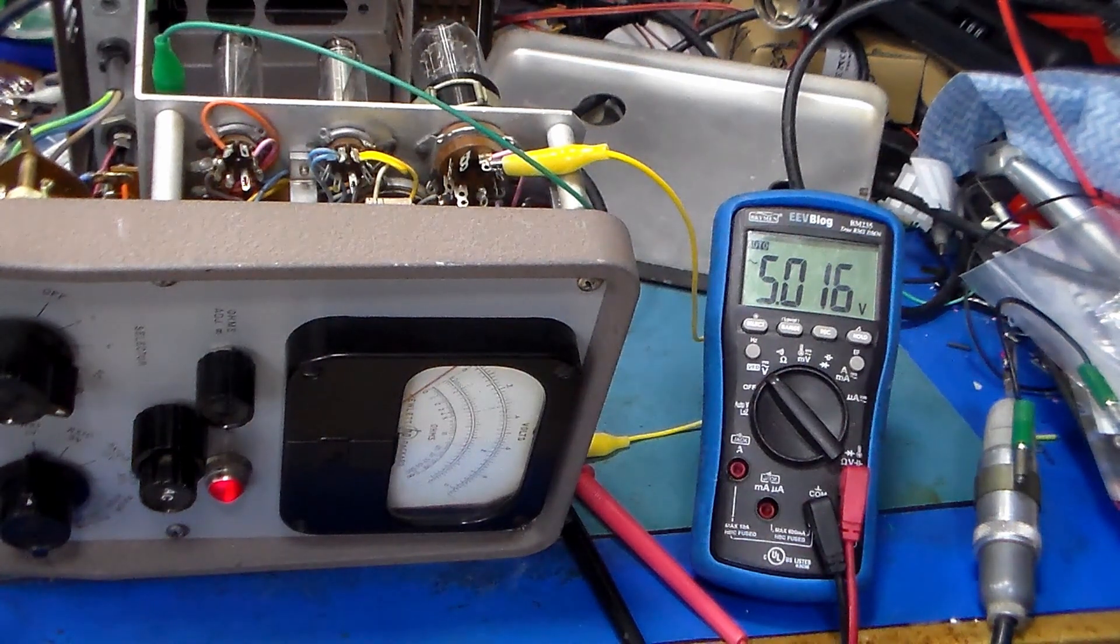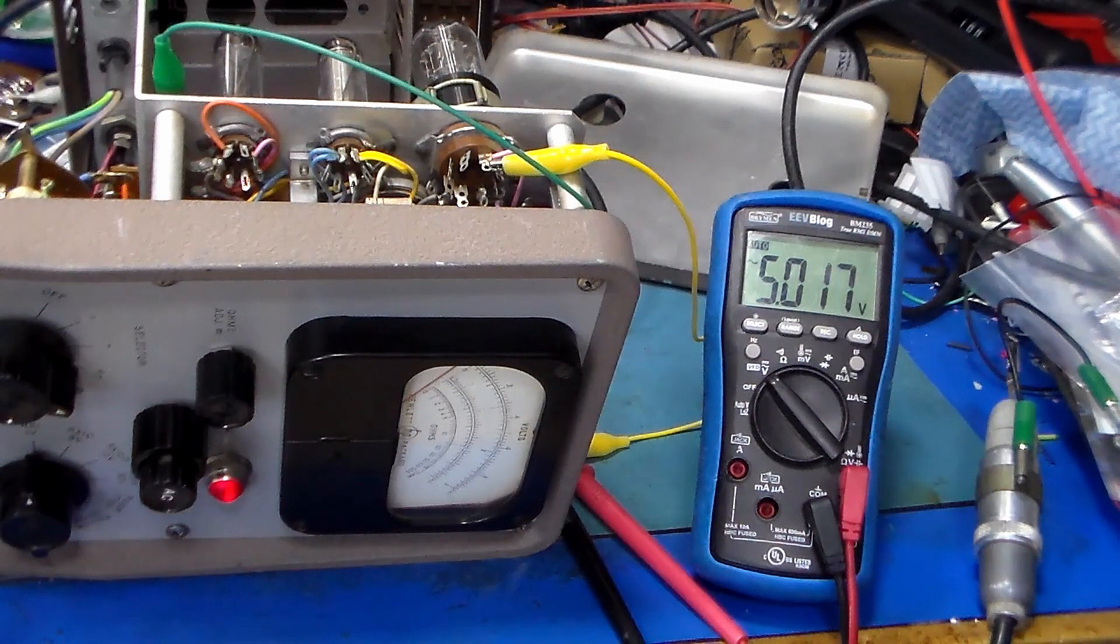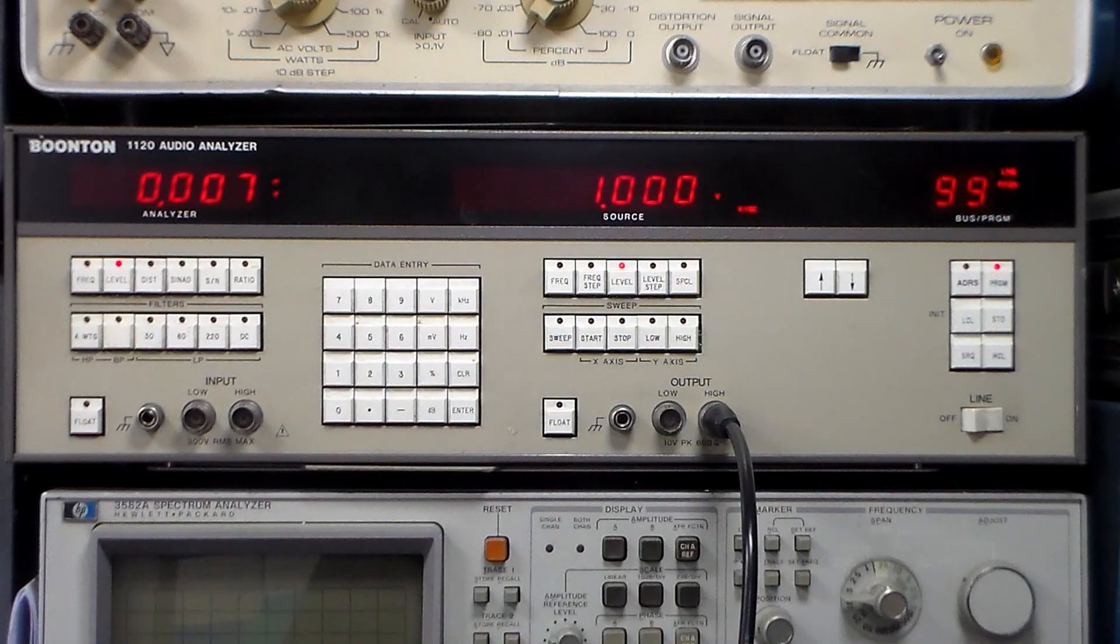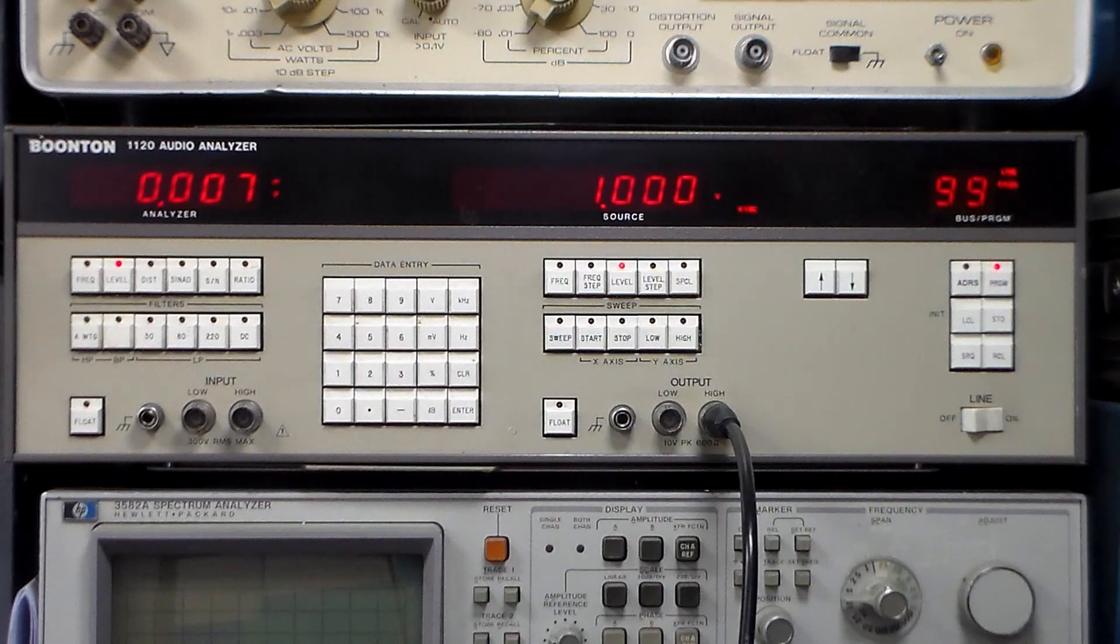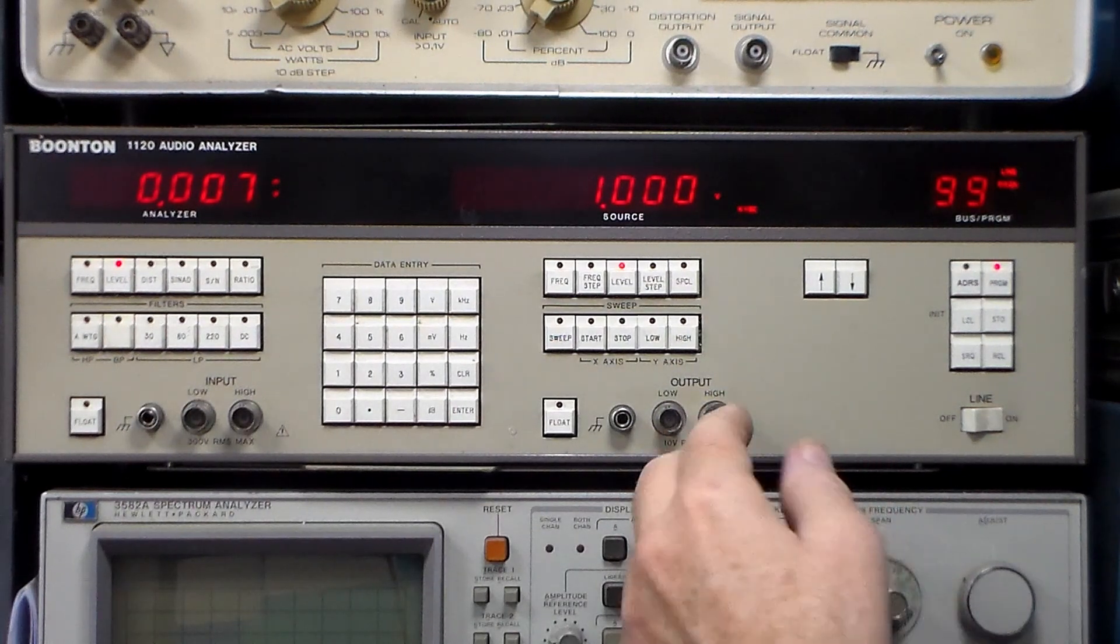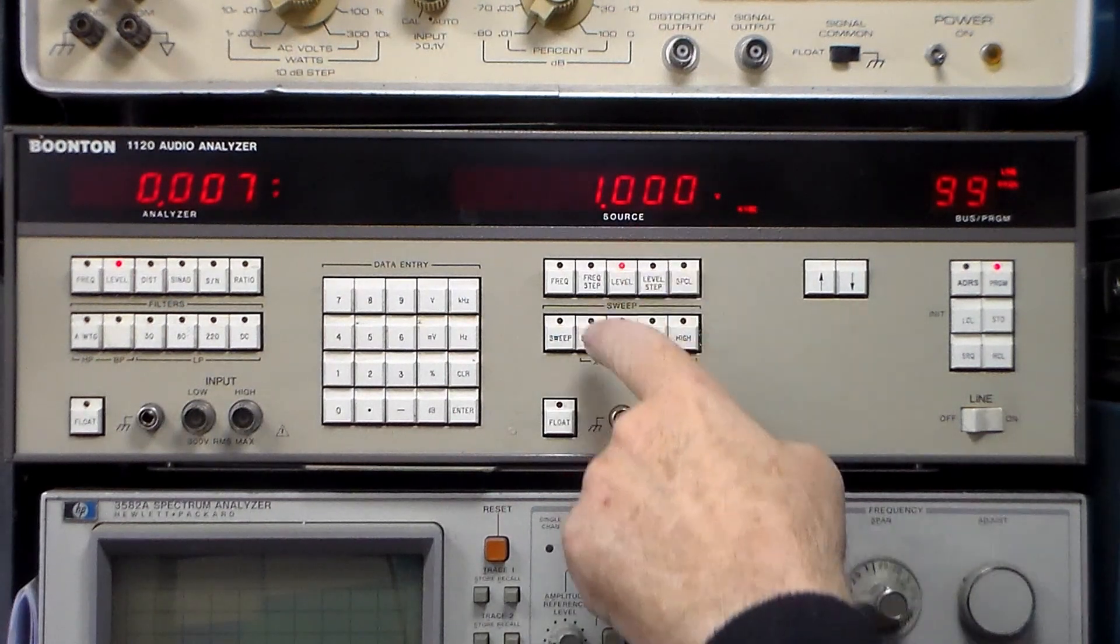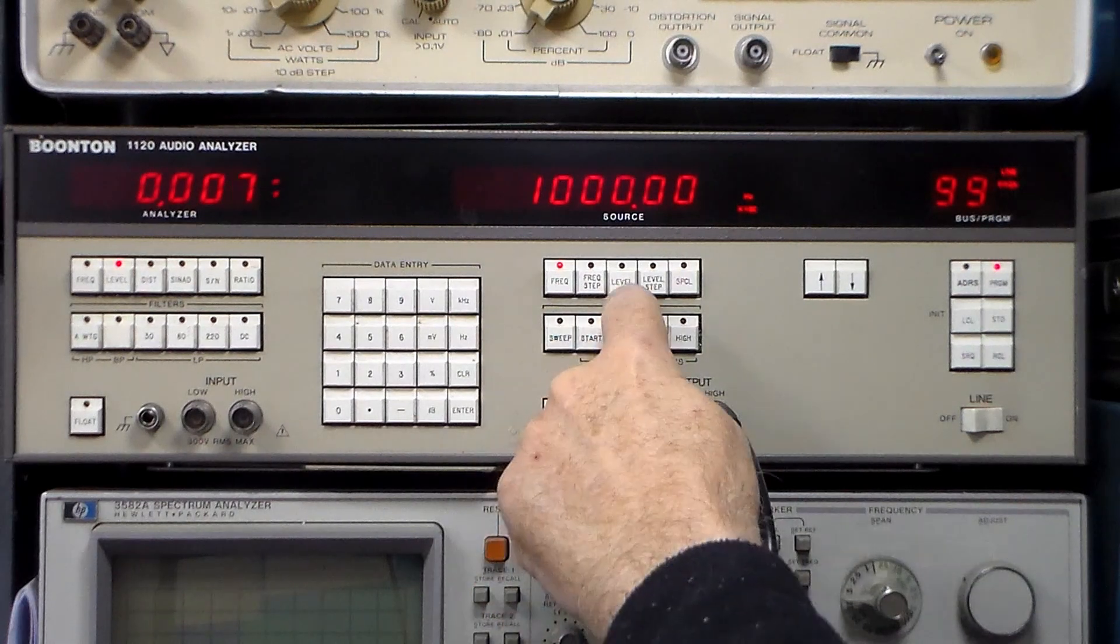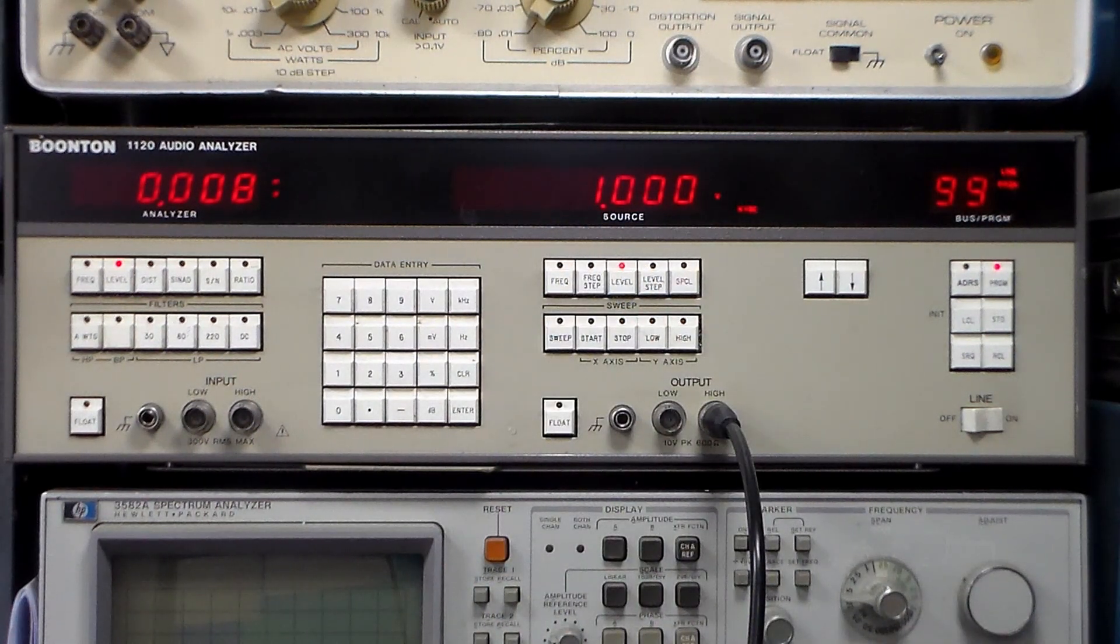Now we're ready to actually start checking calibration of the AC section. To check the AC inputs, I'm only going to check low voltages and a relatively low frequency. We're using a Boonton 1120 audio analyzer, just the generator section. It's displaying level at 1 volt RMS and it's set up for a frequency of 1000 Hz. We'll use this to go up to about 6 volts on the low ranges of the HP 410B.